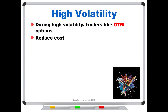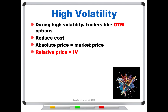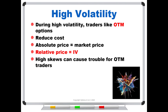These out-of-the-money options seem less expensive — if I'm wrong, I don't lose as much, but I still have a chance of making good money in a high volatility environment. But this is where you have to understand the difference between the absolute price of an option, which is the market price, and the relative price, which is the implied volatility. If you're not watching implied volatility, it's easy to step into traps, especially when we get high skews, because high skews can cause trouble for out-of-the-money traders.